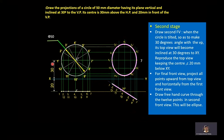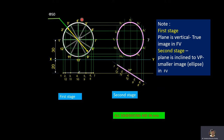Because the circle makes an angle of 30 degrees to the VP, the image of the circle appears as an ellipse in the second stage front view. In the first stage, the plane is vertical, so you get the true image in front view. In the second stage, the plane is inclined, so you get a smaller image — an ellipse — in front view. Because the plane is perpendicular to HP, in top view it is a line in both stages. When the plane is parallel to VP you get the true image; when it is inclined to VP you get a reduced image, which is an ellipse.